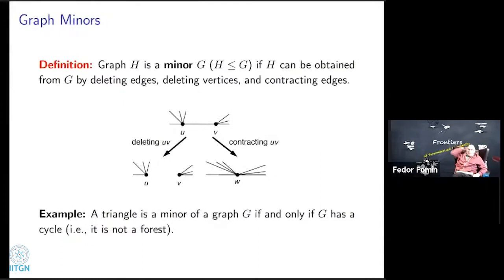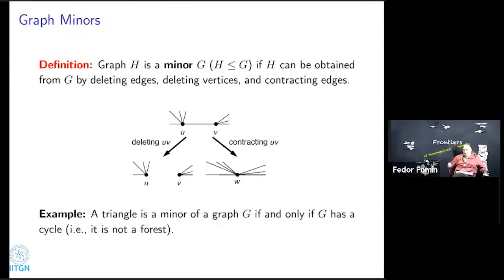For example, a triangle — the cycle on three vertices — is a minor of a graph if and only if the graph contains a cycle (i.e., is not a forest). Because if I have a cycle in a graph, I can always contract all but three edges of the cycle to obtain a triangle, and then delete all remaining edges and vertices.